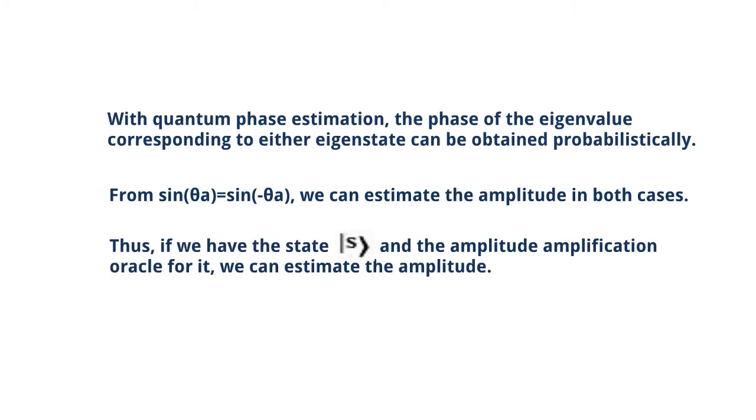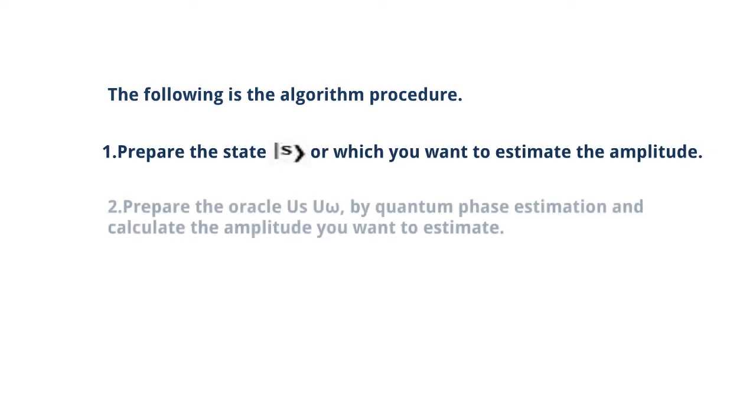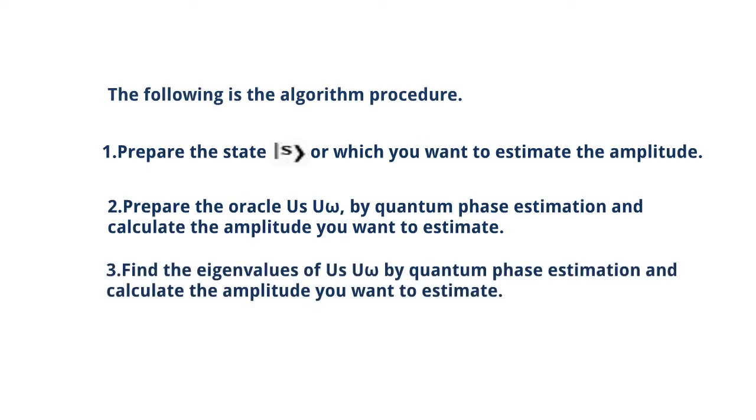From sin theta a equals sin theta a, we can estimate the amplitude in both cases. Thus, if we have the state s and the amplitude amplification oracle for it, we can estimate the amplitude. The following is the algorithm procedure: 1. Prepare the state s for which you want to estimate the amplitude. 2. Prepare the oracle Us U omega. 3. Find the eigenvalues of Us U omega by quantum phase estimation and calculate the amplitude you want to estimate.